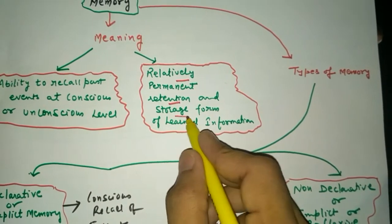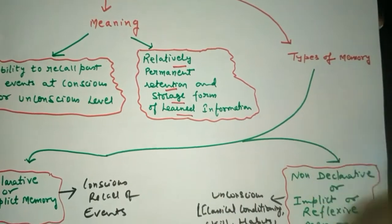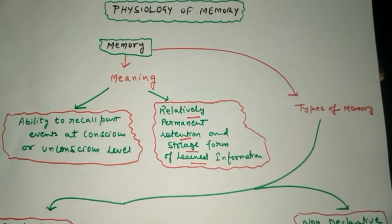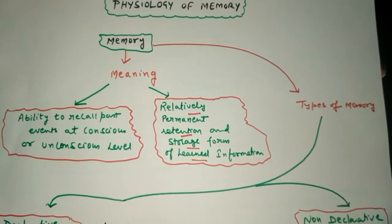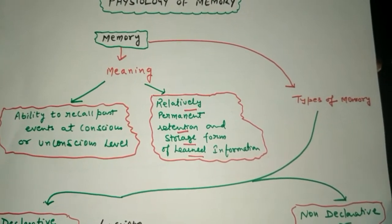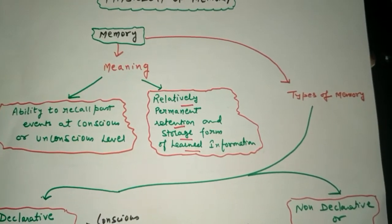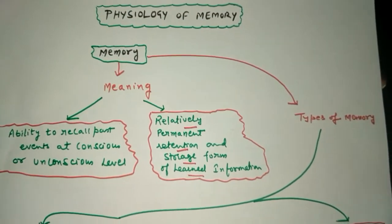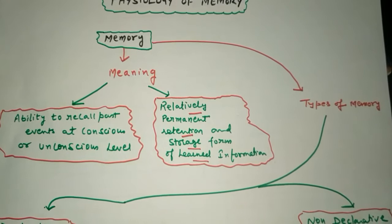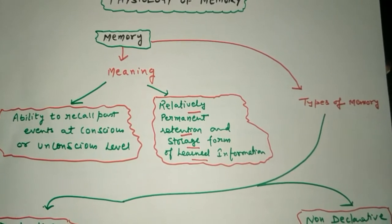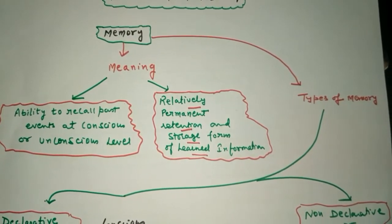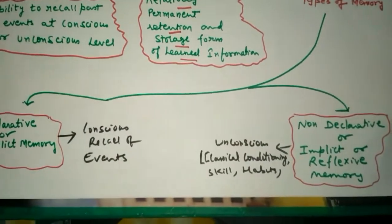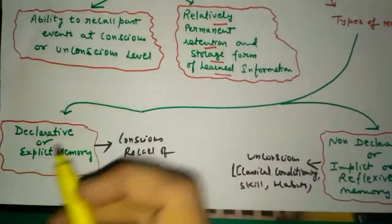Memory involves the retention of information in the brain, stored in the form of learned information — what you have learned from childhood or in future life. Some memories remain as such. Basically, memory is the storage and collection of events. Next is the types of memory — memory can be categorized into two types.